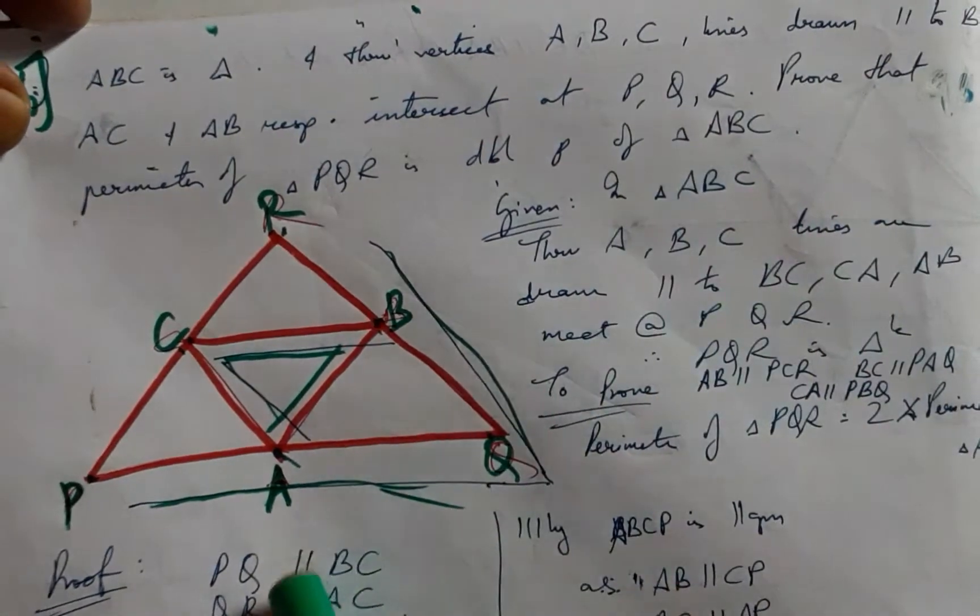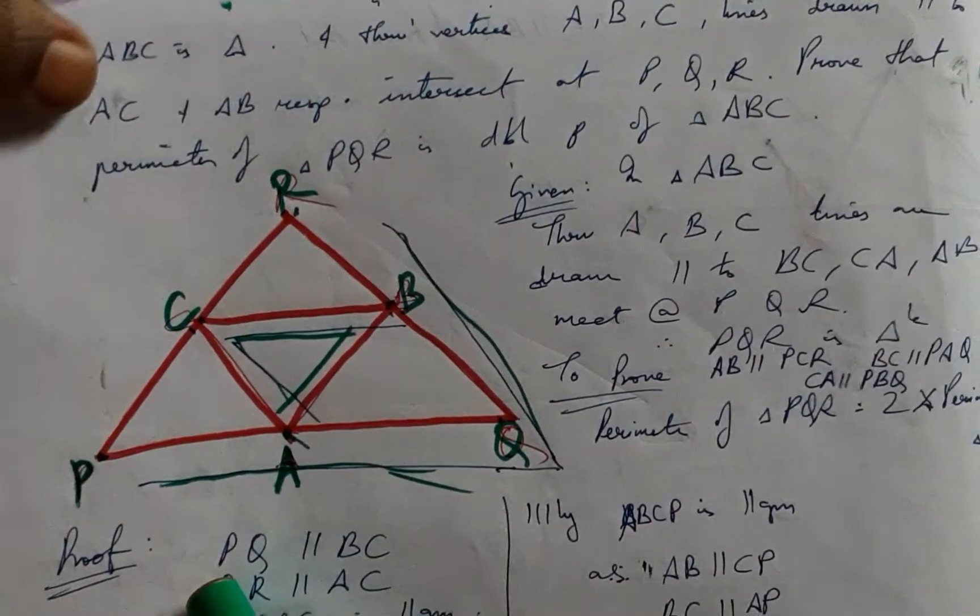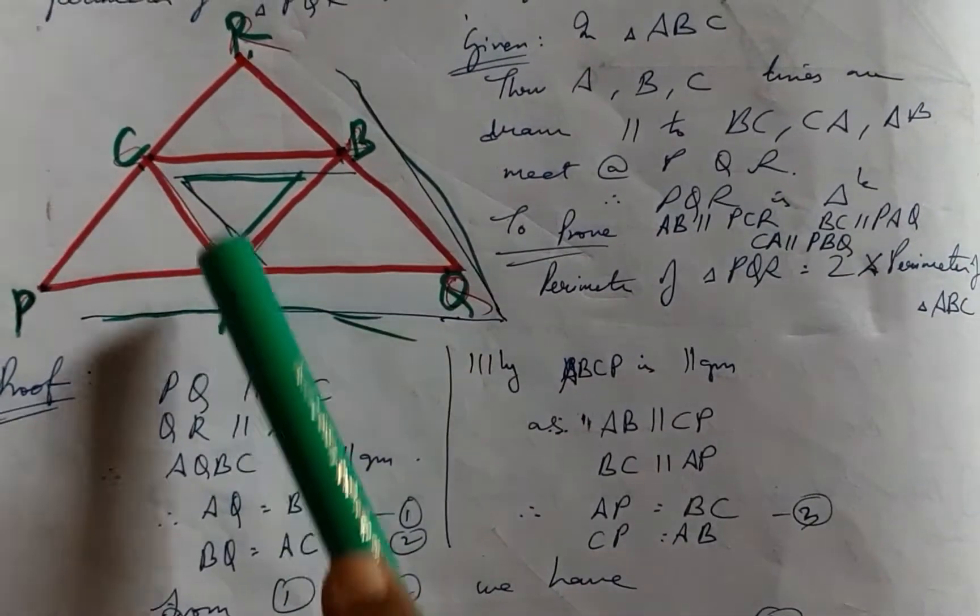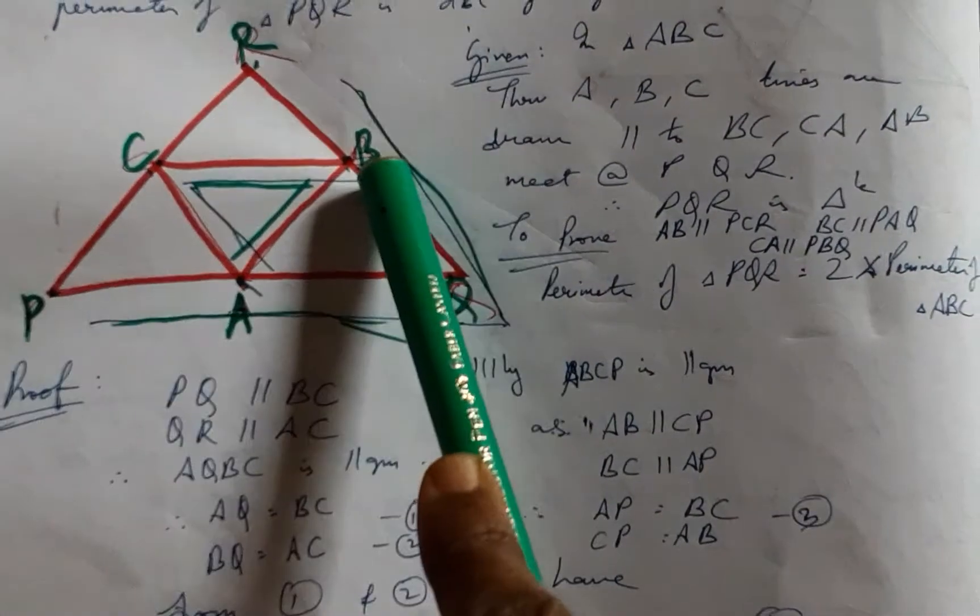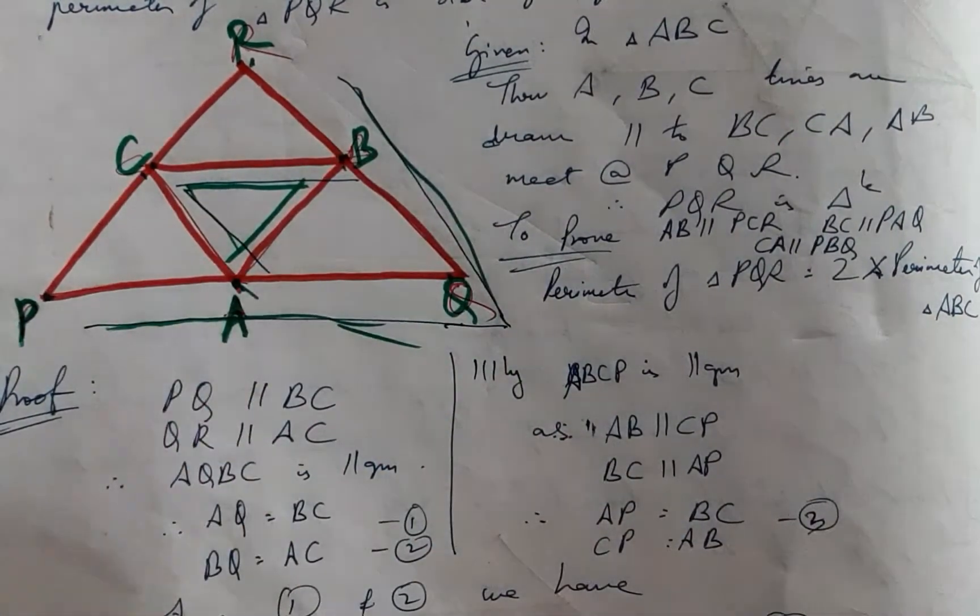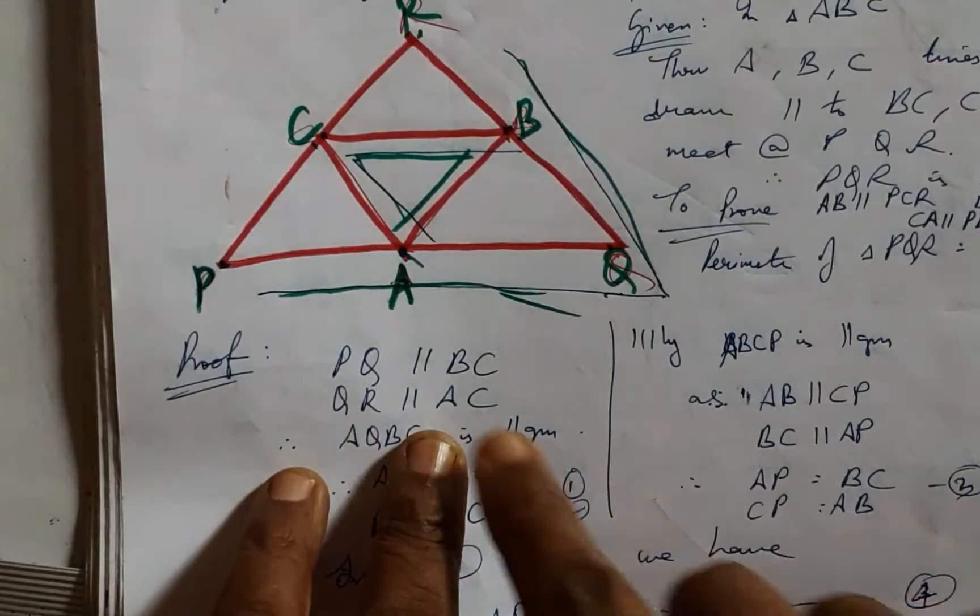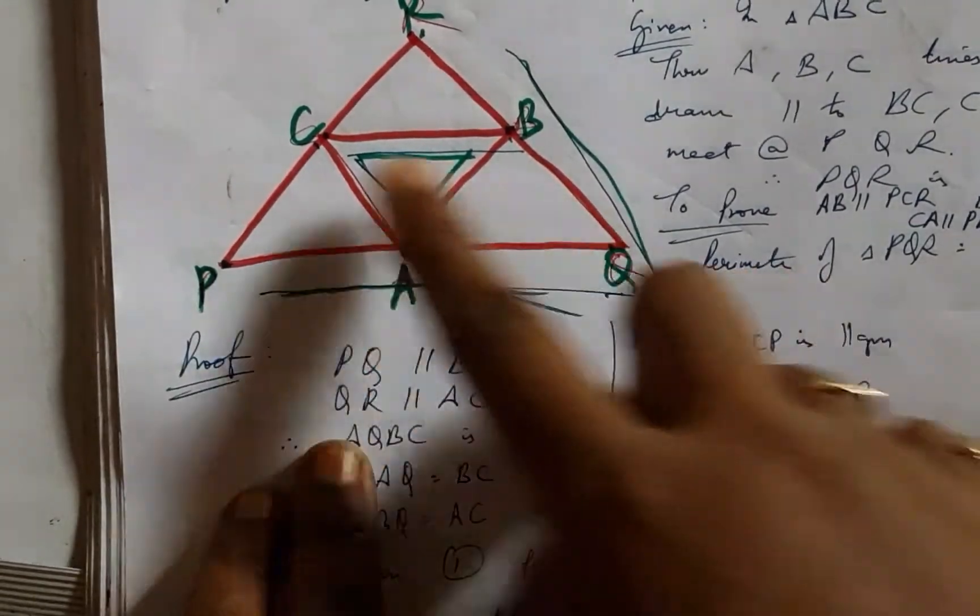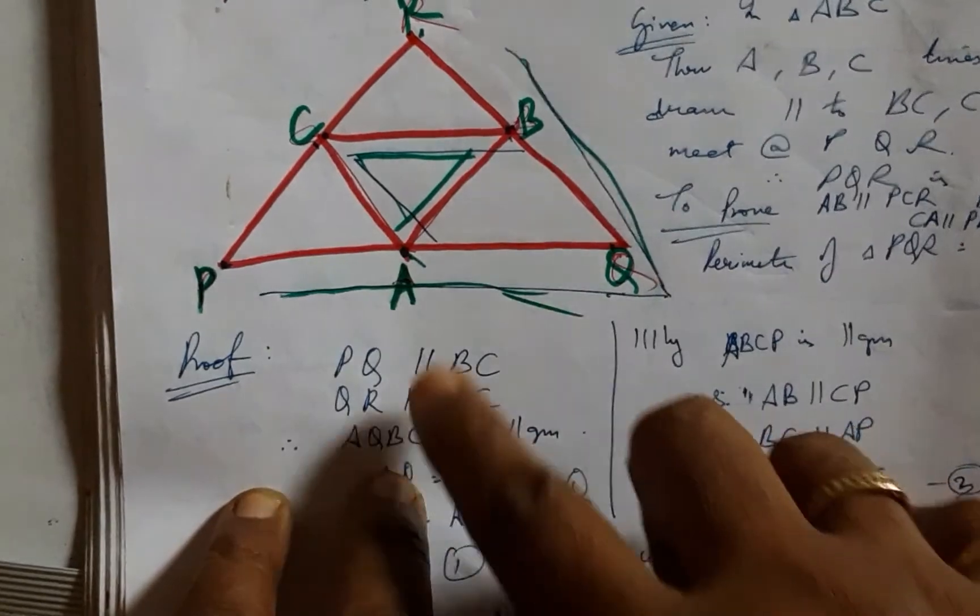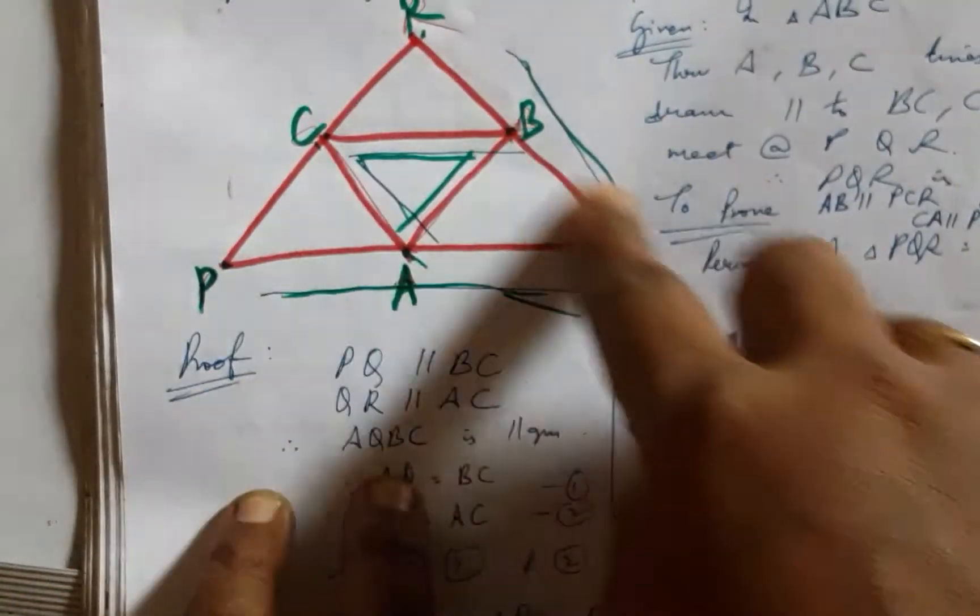Now we have to go to the proof and prove that this is double. The first part is: PQ is parallel to CB and PC is parallel to AB. So we have AQBC as a parallelogram, being this being part of this. Once there is a pair of opposite parallel sides, we have a parallelogram in place.